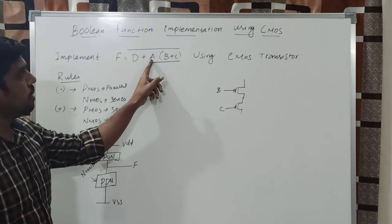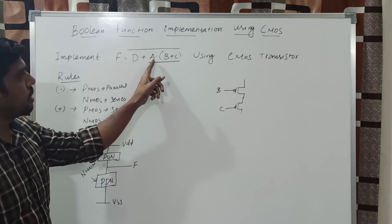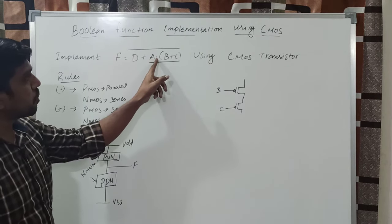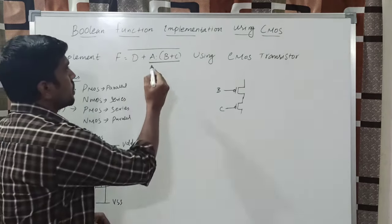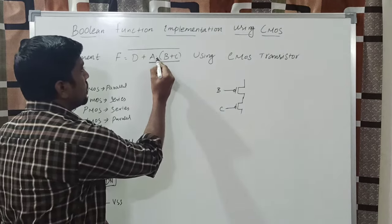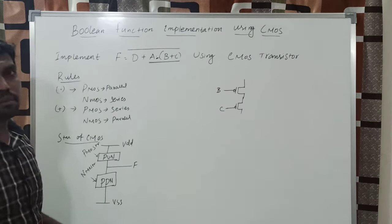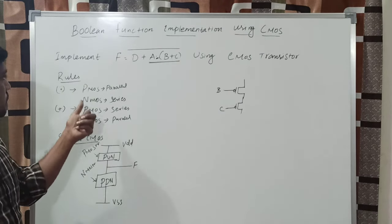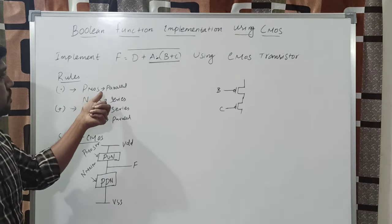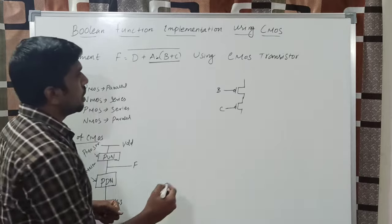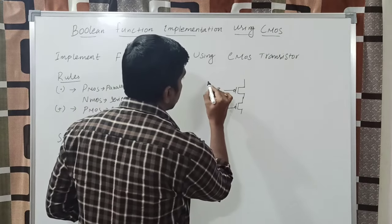Next, A is the product of B plus C — that is A dot (B plus C). Here we are using the multiplication function, so PMOS connects in parallel.